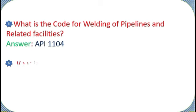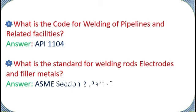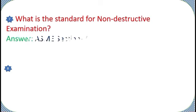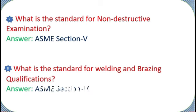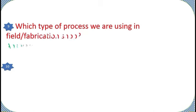What is the standard for welding rods, electrodes, and filler metals? Answer: ASME Section 2 Part C. What is the standard for non-destructive examination? Answer: ASME Section V. What is the standard for welding and brazing qualifications? Answer: ASME Section 9.